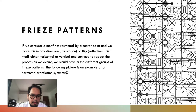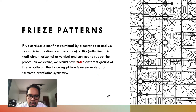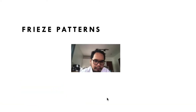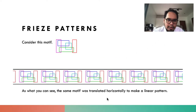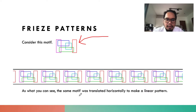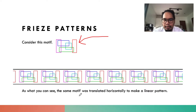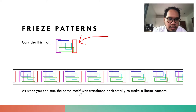The following picture is an example of a horizontal translation symmetry. We consider this motif, and you can see that the motif is repeated horizontally to make a linear pattern. This is one example of a frieze pattern — spelled F-R-I-E-Z-E, not F-R-E-E-Z-E.